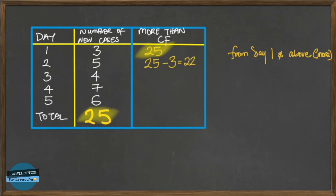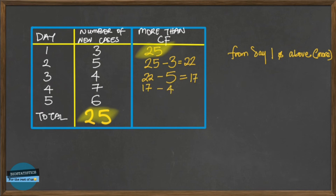For day three, we need to remove day one and day two. We already removed day one to get 22, so we subtract day two's frequency of five: 22 minus 5 gives us 17. For day four, we remove day three's frequency from 17, and similarly for day five. Remember, there are no totals.